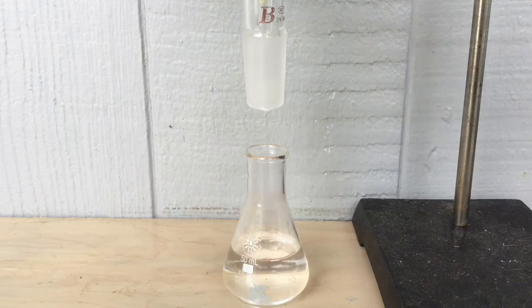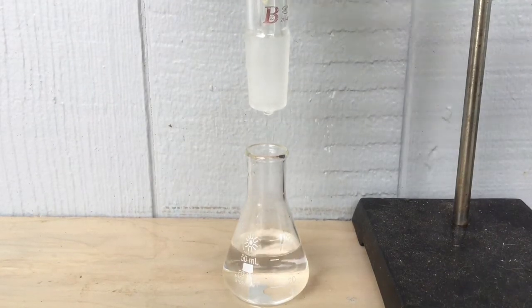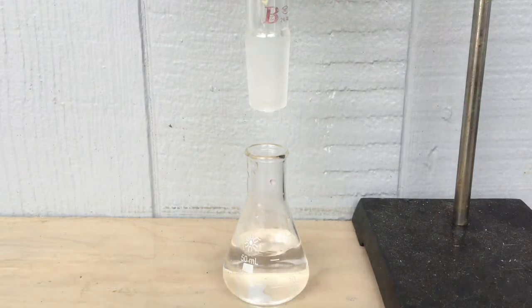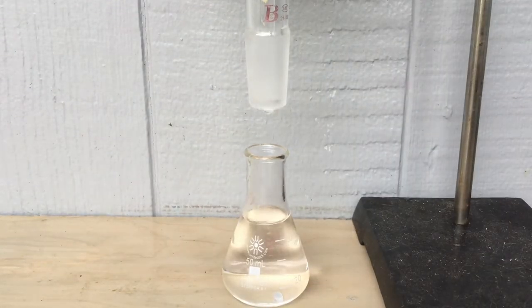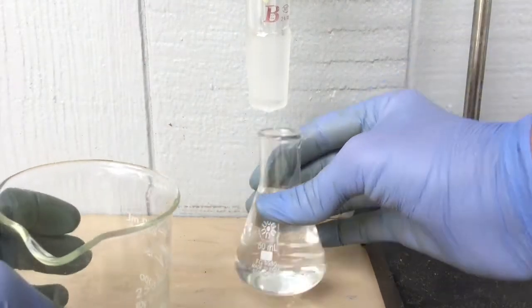It's easy as that, and I hate burettes anyway. Now you can see a little bit of pink color change, but also the flask was getting a little too full, so I transferred it to another beaker.